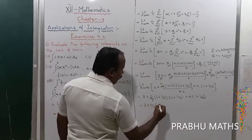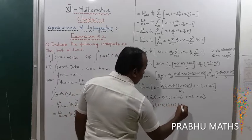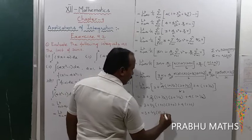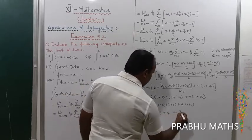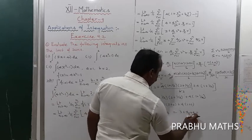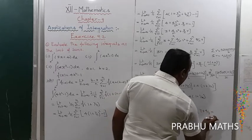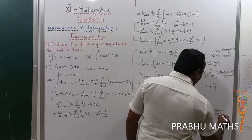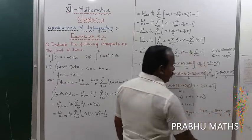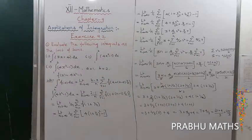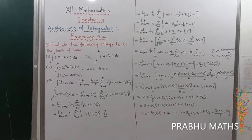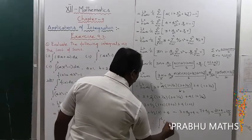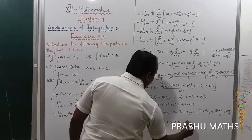That is equal to: 3 + (2/3)(1)(2) plus 4(1) = 3 + 4/3 + 4. So, 7 + 4/3 equals 21/3 + 4/3 equals 25/3. Therefore, the integral from 1 to 2 of (4x² - 1) dx is equal to 25/3. We get the solution.